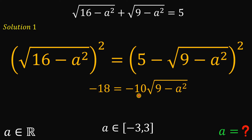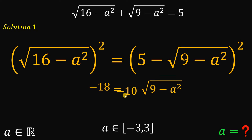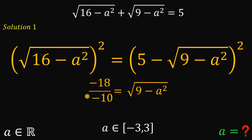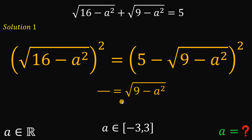At this point, let's divide both sides by negative 10 to isolate the square root term. Negative 18 over negative 10 is just positive 9 over 5.